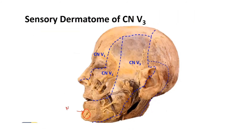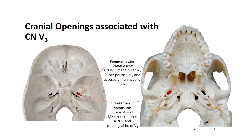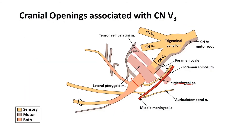Moving on to the sensory supply. This region is supplied by the mandibular division of the trigeminal nerve. The mandibular nerve enters through the foramen ovale, which acts as the communication pathway between the infratemporal fossa and the middle cranial fossa. The trigeminal nerve is the fifth cranial nerve; from the trigeminal ganglion arise three divisions: the ophthalmic, maxillary, and mandibular divisions.